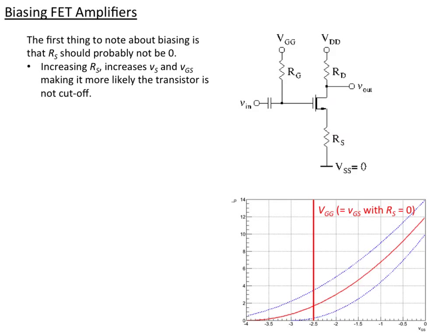So the first thing we want to note is that the source resistor should probably not be zero. If we increase, if we put in a resistor there, that increases the voltage at the source and probably increases the voltage between the gate and the source, making it less likely that the transistor will cut off. The real problem with having a source voltage equal to zero is that it's difficult to make sure that the transistor is not cut off.